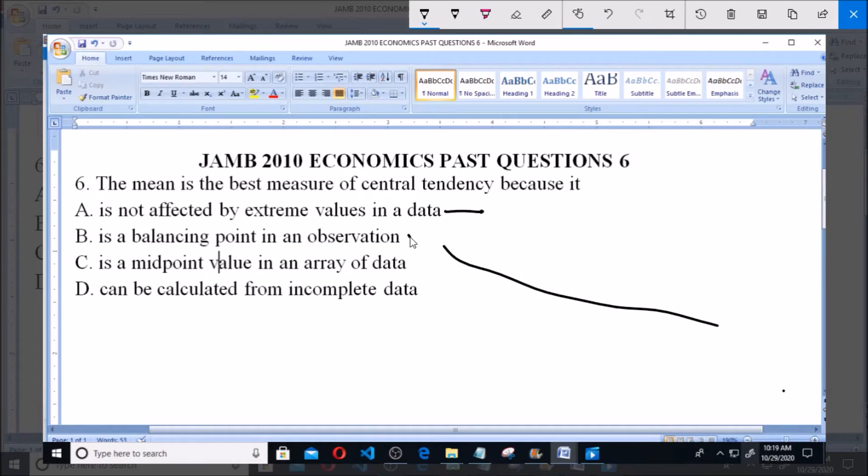Option B: It is a balancing point in an observation. Yes, the mean is a balancing point in an observation. It is the commonest measure of central tendency.